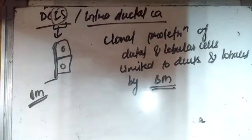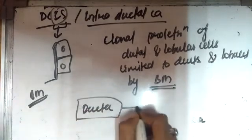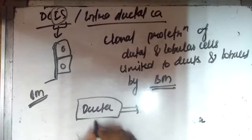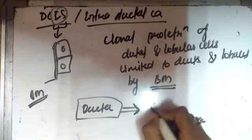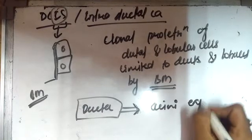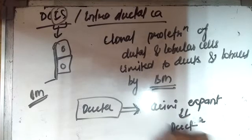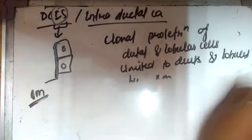Now why it is called ductal? Because when it involves lobules the expanded acini resembles that of duct. This is why it is called ductal, because it is only present in ducts and not in lobules. When the acini expand it appears that of duct. Because of the appearance we have classified it into ductal and lobular.